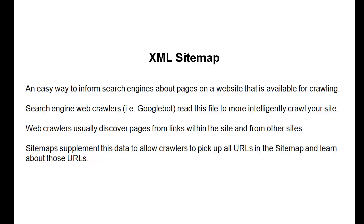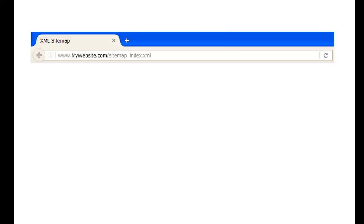Search engines have these web crawlers that will read your website and figure out ways on how to best organize them for search results. Traditionally, search engines will look at various different links to your site — inside your own website as well as external to your website — to learn about your site. But sitemaps also help supplement how they learn about your website.